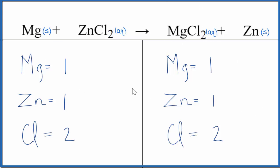So that's the balanced reaction for Mg plus ZnCl2. Again, the type of reaction would be a single displacement reaction. This is Dr. B and thanks for watching.